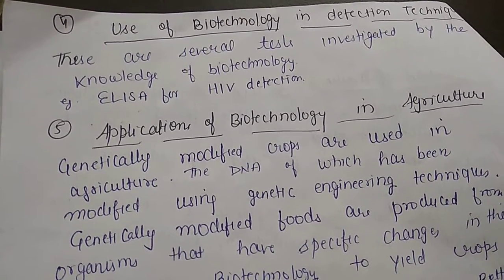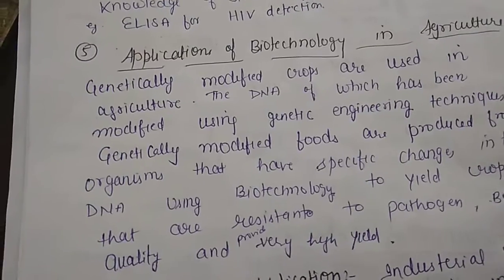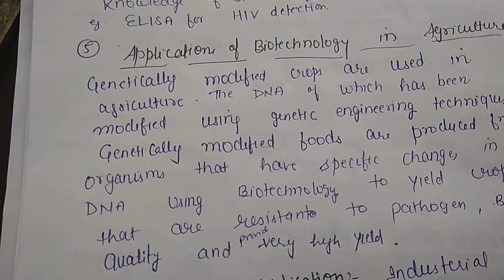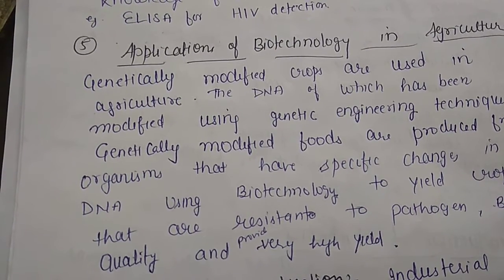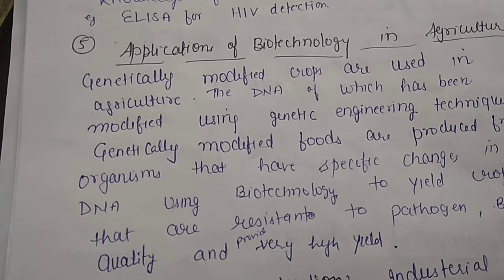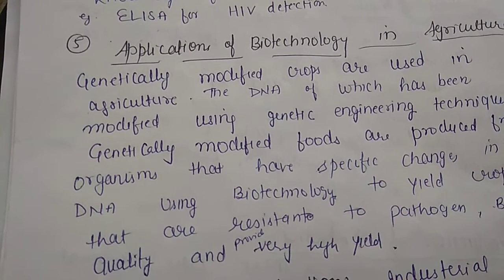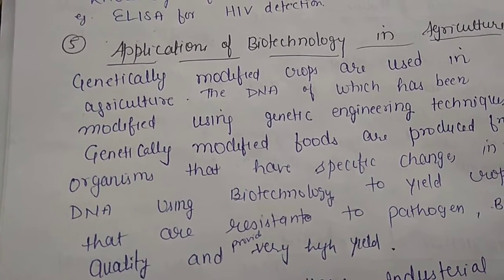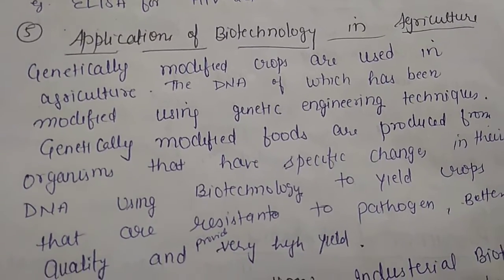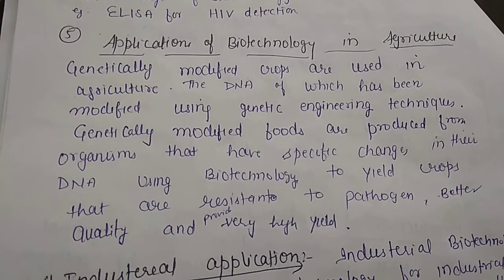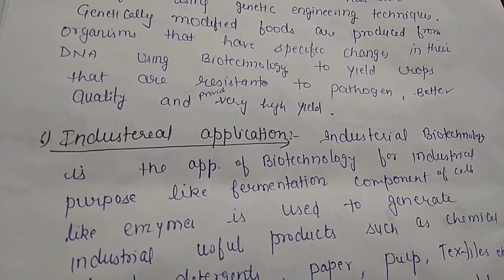Biotechnology also helps in the agriculture field. Genetically modified crops are used in agriculture — crops whose DNA has been modified using genetic engineering. These produce food with higher yields, resistance from pathogens, and better quality.